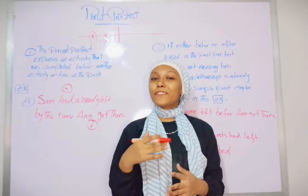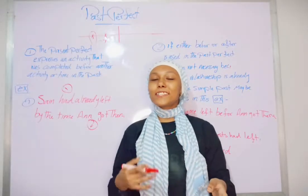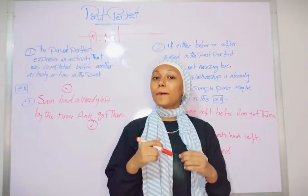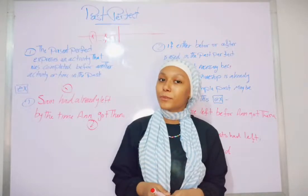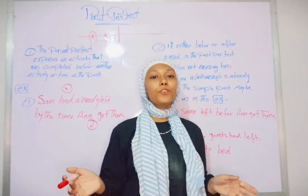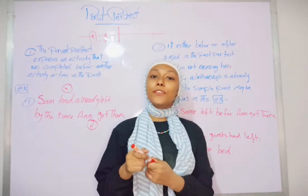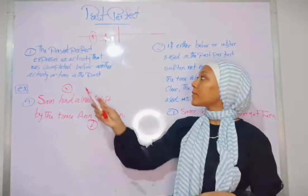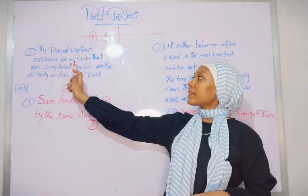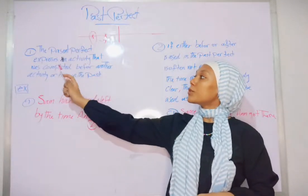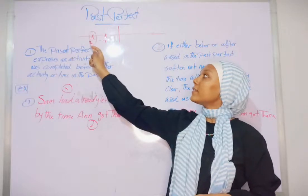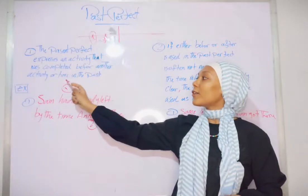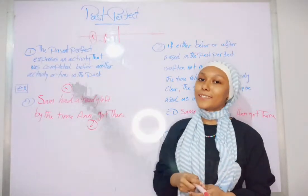We've talked about the affirmative, the negative, and the question forms with regular and irregular verbs. But how about the uses? We have two uses we should focus on. The first one is: the past perfect expresses an activity that was completed before another activity or time in the past.